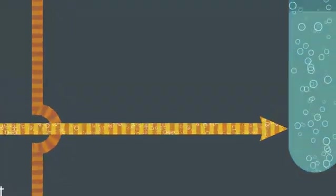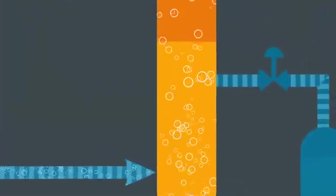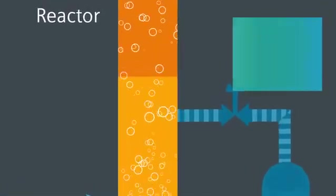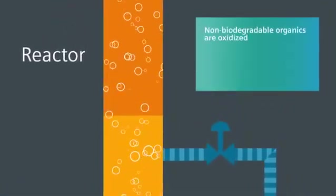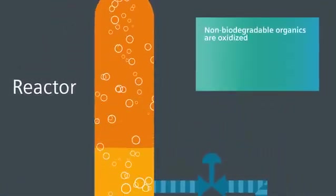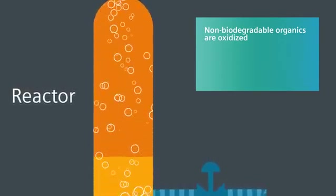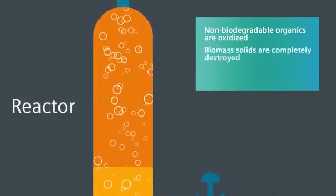During the oxidation process, heat is generated to drive the process, and the non-biodegraded organics adsorbed onto the spent carbon are oxidized. The biomass solids are completely destroyed.